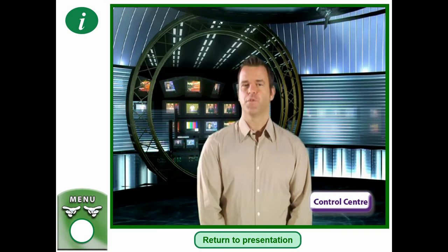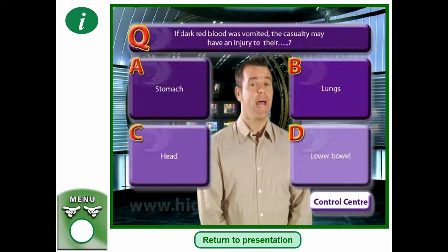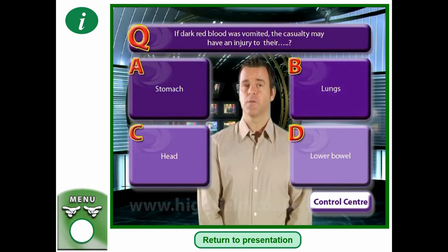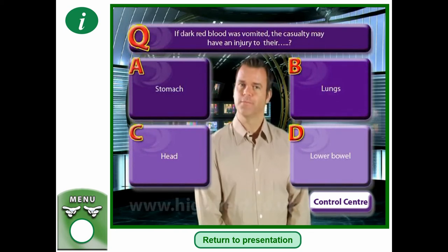If dark red blood was vomited, the casualty may have an injury to their: a) stomach, b) lungs, c) head, or d) lower bowel.